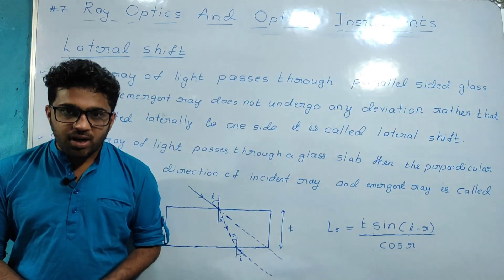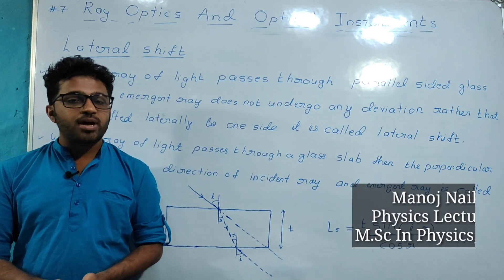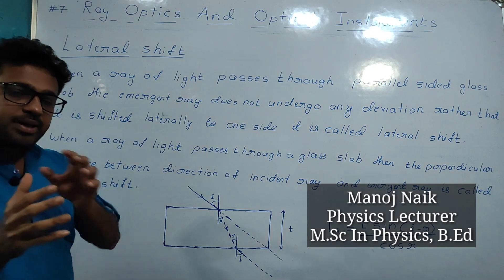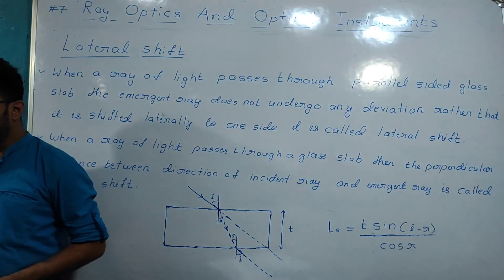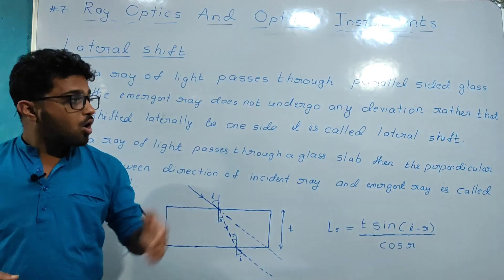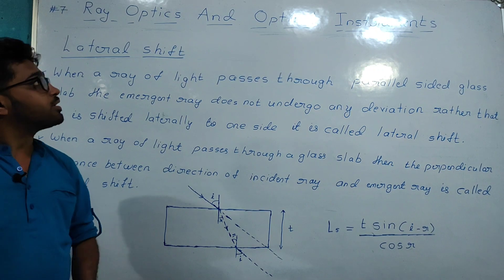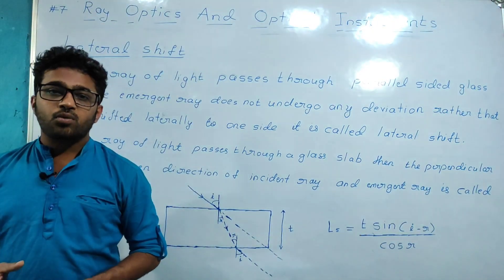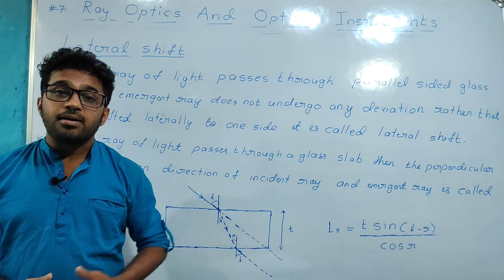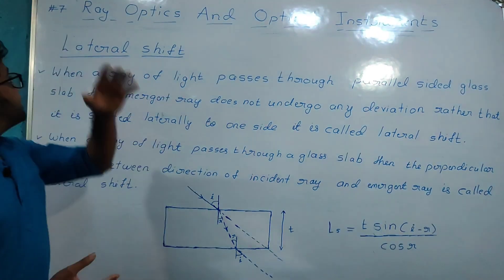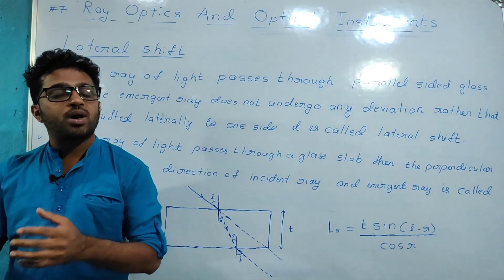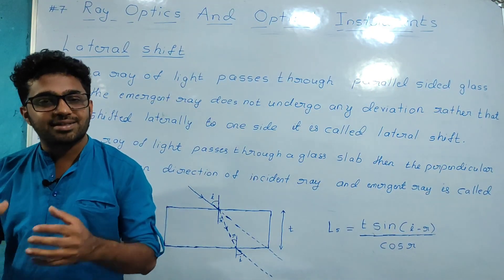Hello everyone, welcome to EducateLight4Life. In this video we are going to discuss the concepts of lateral shift and normal shift — their meaning and mathematical expressions. All these concepts belong to the chapter Ray Optics and Optical Instruments, which is the ninth chapter of second PUC physics according to NCERT syllabus. This video is the seventh video of this chapter on the EducateLight4Life channel. If you haven't watched the previous videos, you can check the links in the description.